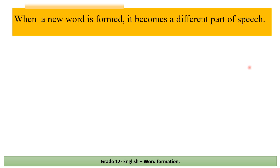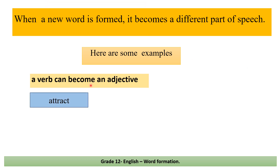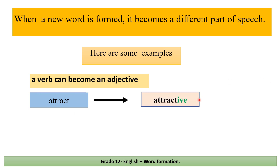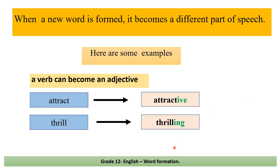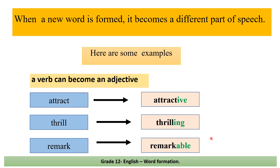Here are more examples. A verb can become an adjective. 'Attract' (verb) → 'attractive': we add '-ive'. 'Thrill' (verb) → 'thrilling': we add '-ing'. 'Remark' (verb) → 'remarkable': we add '-able'.